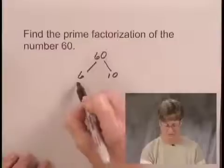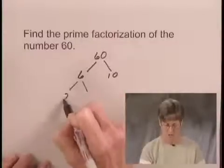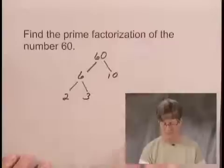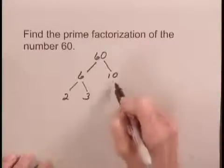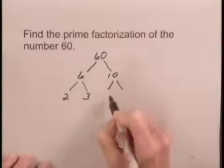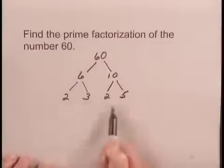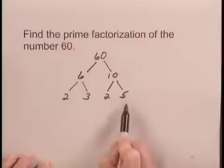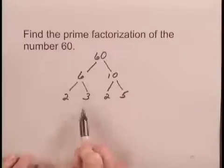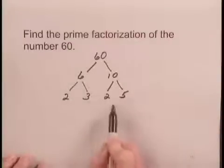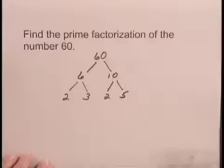We can factor 6 as 2 times 3 and 10 has factors 2 and 5, so we can factor 10 as 2 times 5. Now we look at all the numbers at the ends of the branches of the tree and we see that each of these numbers 2, 3, and 5 is a prime number.